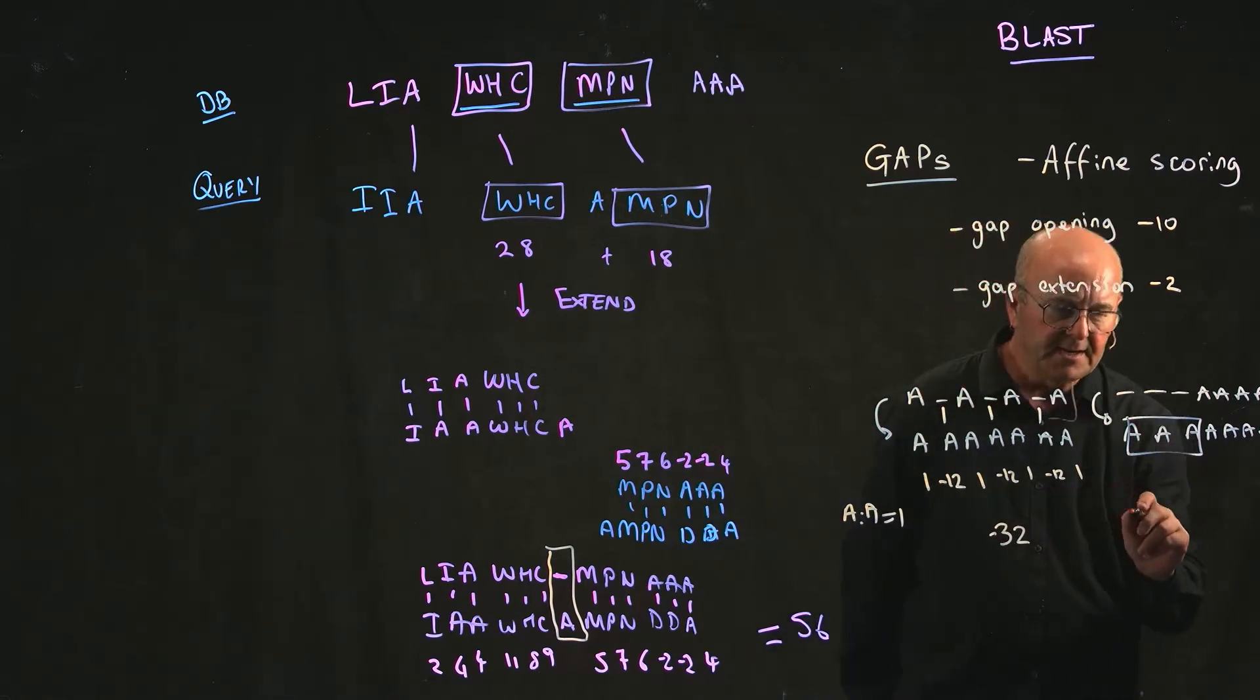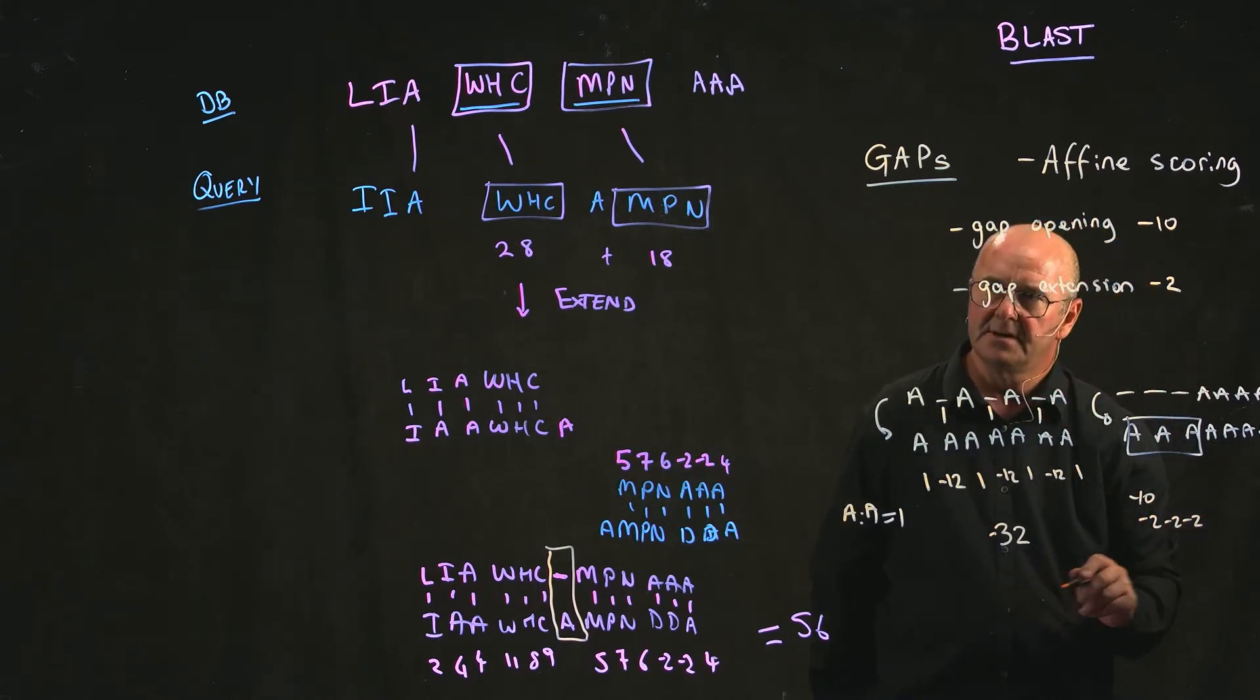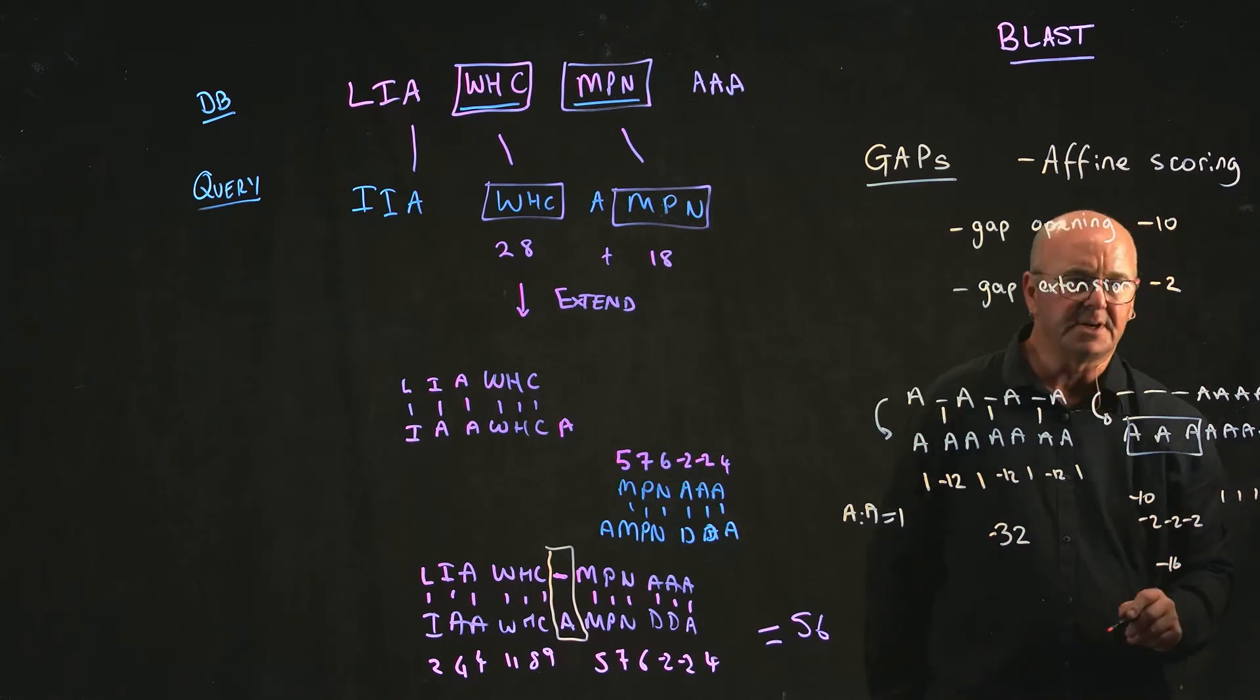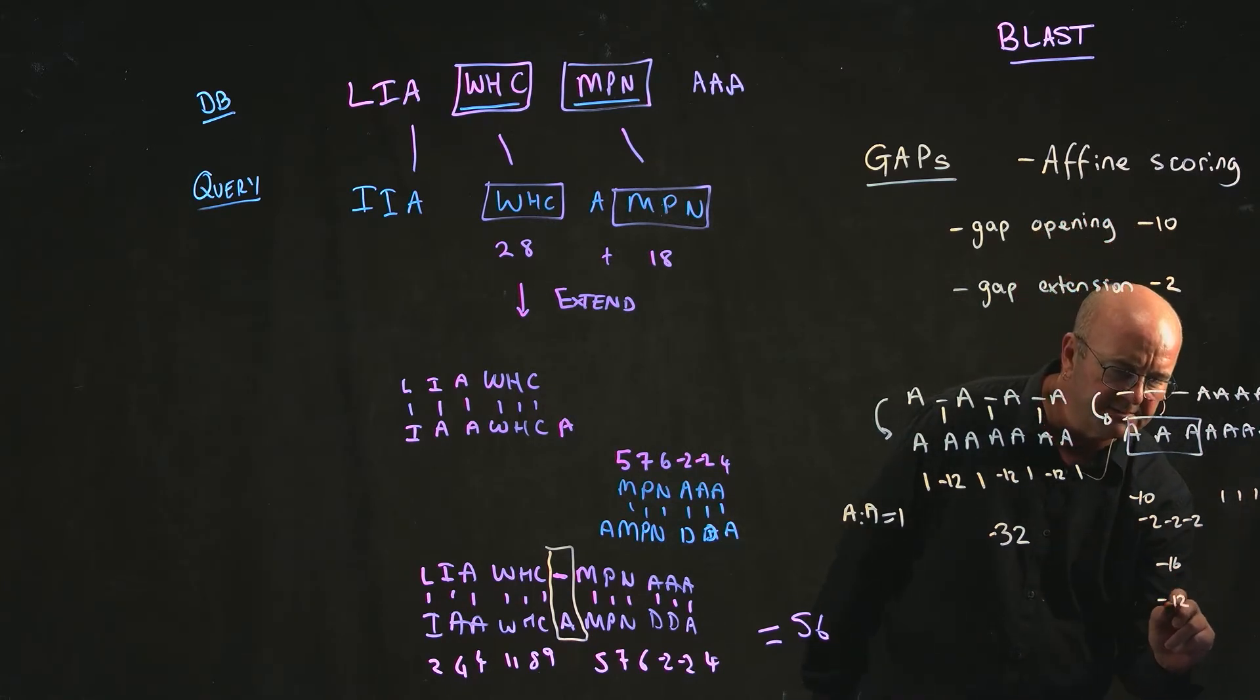On the other hand over here we're going to get a score of minus 10 to open our gap. And then we're going to get a score of minus 2, minus 2, minus 2. So now our score here is minus 16. And then we've got our 4 plus ones. And so our overall score here is minus 12.